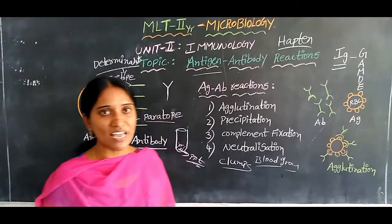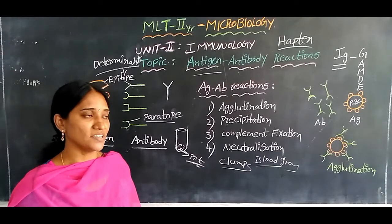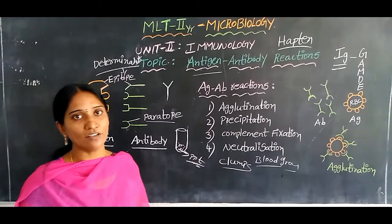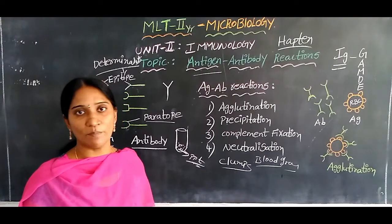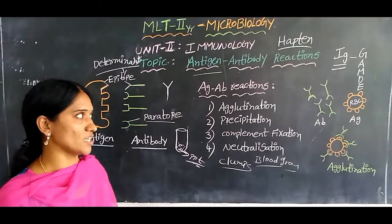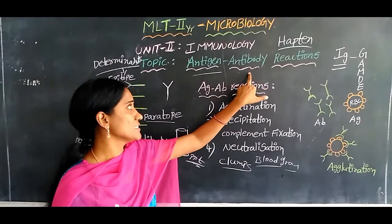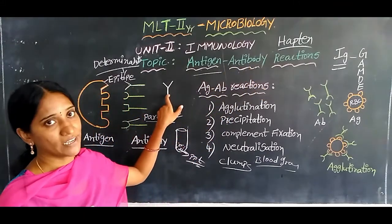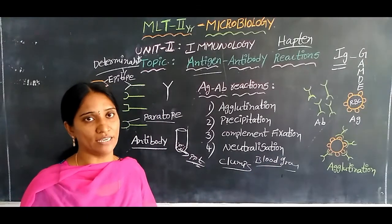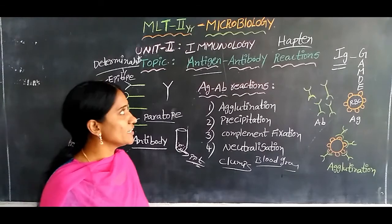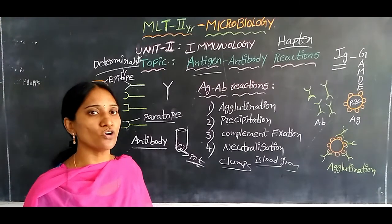Antigens are foreign substances that enter our body and stimulate the production of antibodies. Antigens include microorganisms, toxins, proteins, polysaccharides, carbohydrates, chemicals, and drugs. Antibodies are Y-shaped and are also called immunoglobulins. Globulin is a protein involved in immune response, hence the name immunoglobulins.